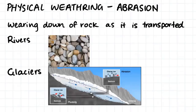The first type of physical weathering we'll look at is abrasion. Abrasion is the wearing down of rock as it is transported. Abrasion occurs most commonly in rivers and glaciers. In rivers where the water is flowing quite quickly, rocks are carried and bump up against each other, and the sharp edges of the rocks are worn down forming quite round pebbles. This is why we find round pebbles on the banks of rivers. Glaciers cause abrasion as the heavy ice sheets flow downhill, scraping along the bottom of the bedrock and abrading it.